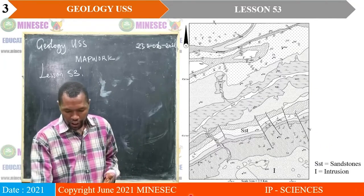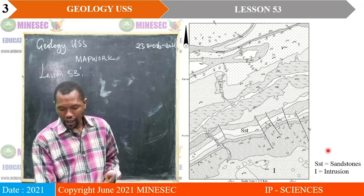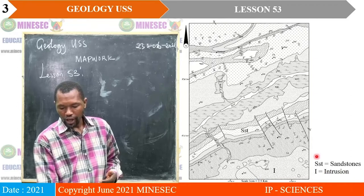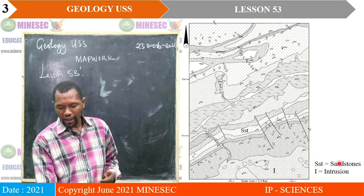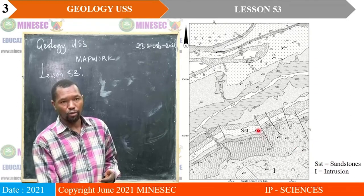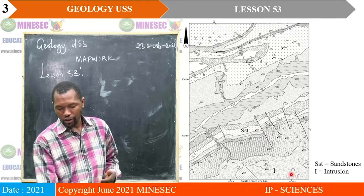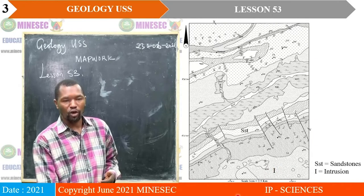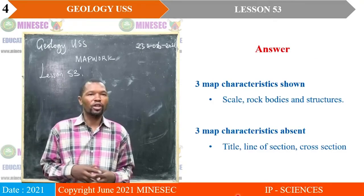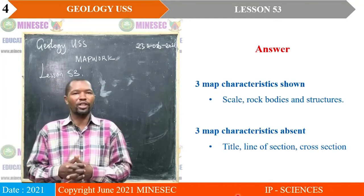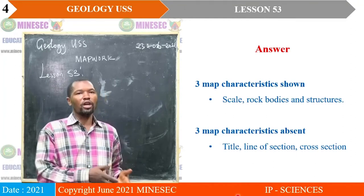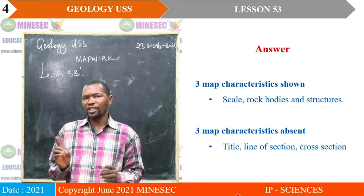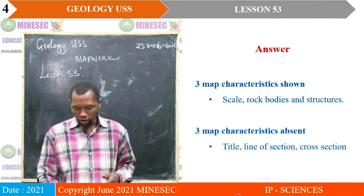There are three key essential features present: you have the scale of the map, then we have SS — that is sandstones — which indicates rock bodies, and then we also have I, which indicates intrusions. So those are the common essential features. The three main characteristics shown involve the scale, the rock bodies, and the structures.